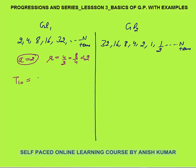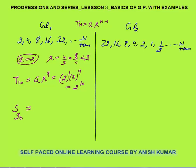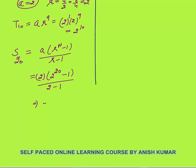Can you calculate the 10th term? The 10th term of the GP will be A·R^9. We know the nth term equals A·R^(N−1), so the 10th term is 2·2^9, which equals 2^10. Can you calculate the sum of the first 20 terms? The formula is A·(R^N − 1)/(R − 1). Here A is 2, R is 2, so it is 2·(2^20 − 1)/(2 − 1), which gives 2·(2^20 − 1) as the sum of the first 20 terms.